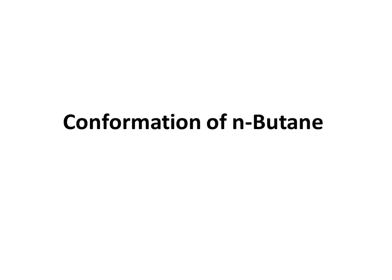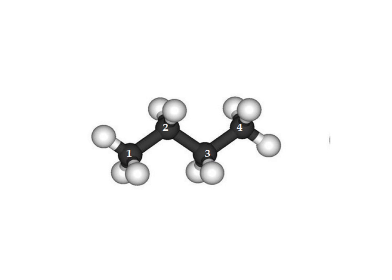Conformation of N-butane. As we already know, free rotation around the carbon-carbon single bond is possible. N-butane has 4 carbon atoms, so free rotation is possible around C1-C2, C2-C3, and C3-C4. Here we are interested in the free rotation around carbon number 2 and carbon number 3.